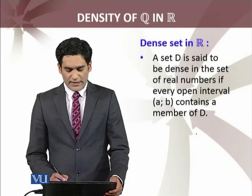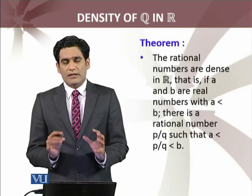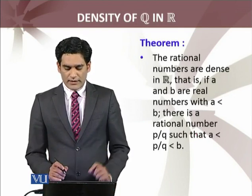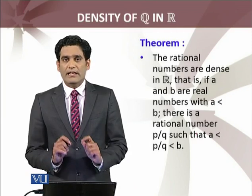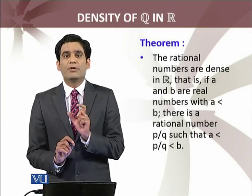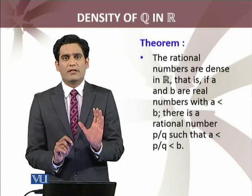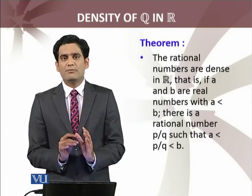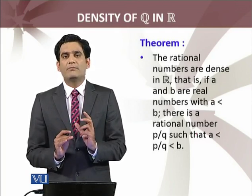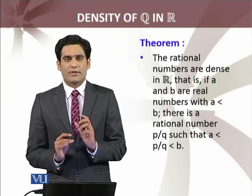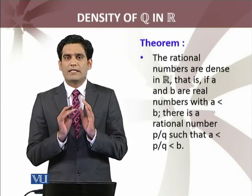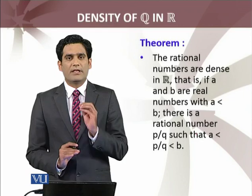A and B are real numbers, and since the set of real numbers is an ordered field, we have A less than B. There must be at least one member of that set D between A and B, for any two real numbers A and B. A set which satisfies this property is said to be dense in the set of real numbers.